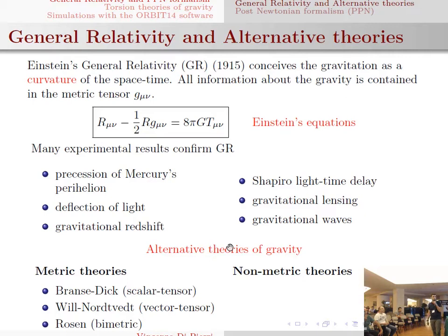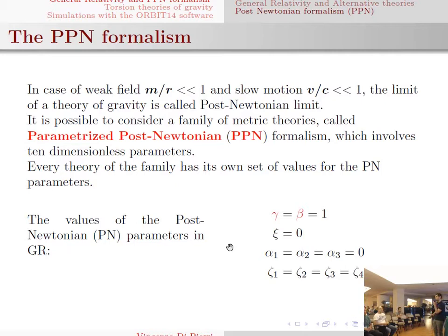These alternative theories can be divided into classes: one is the class of non-metric theories, and the other is the class of metric theories. I focus on the class of metric theories, and that's why I introduce now the parameterized post-Newtonian formalism. In the solar system, where we make most of the experiments and measurements, we are in a region of weak field and slow motion. So it is more useful to use the post-Newtonian limit of a theory, developing all the quantities in series of these small parameters.